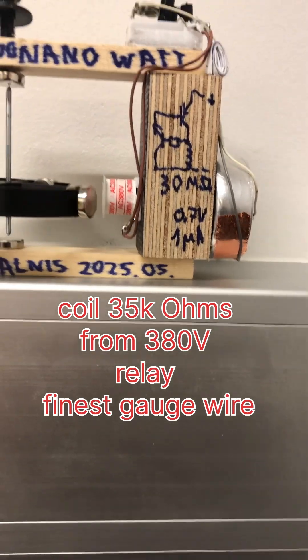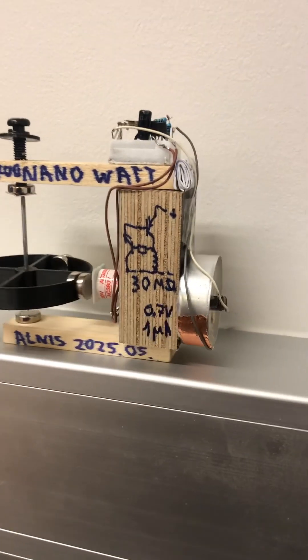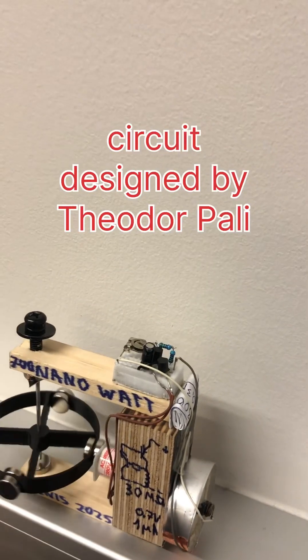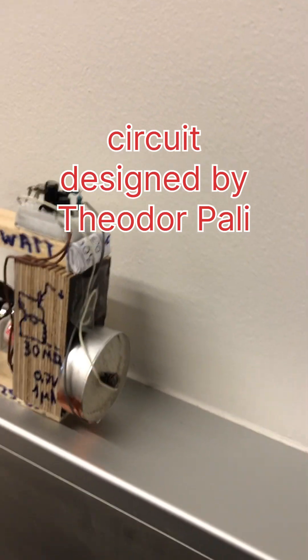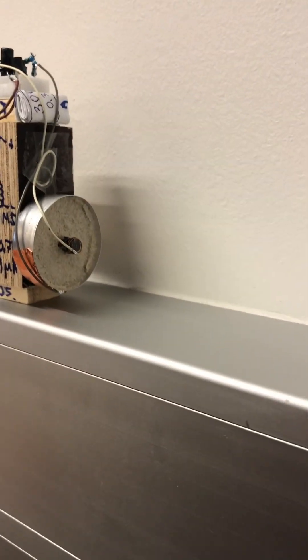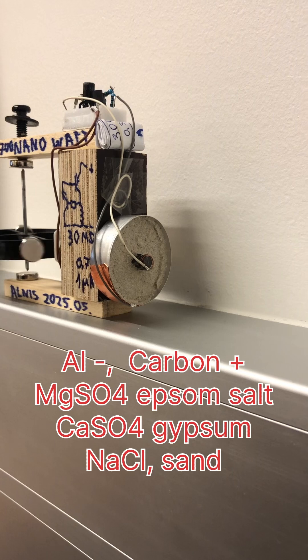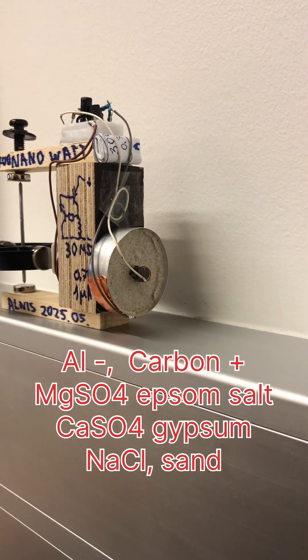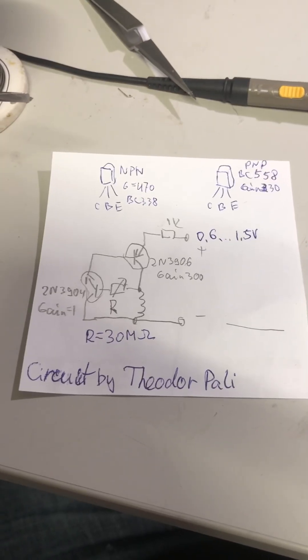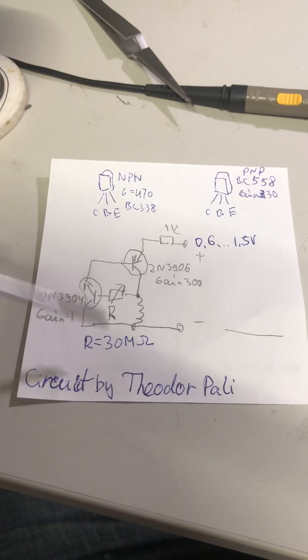Coil is 35 kilo ohms, circuit with two transistors and it runs from a crystal battery, aluminum carbon and gypsum. I have copied circuit designed by Theodor Pali on YouTube.